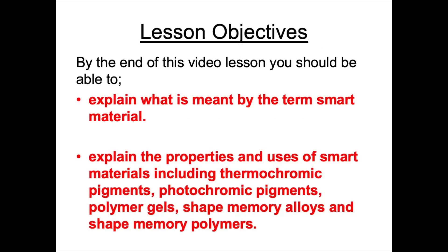By the end of this video lesson, you should be able to explain what is meant by the term smart material. You should also be able to explain the properties and uses of smart materials including thermochromic pigments, photochromic pigments, polymer gels, shape memory alloys, and shape memory polymers.